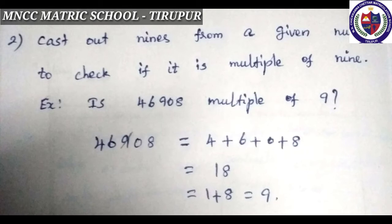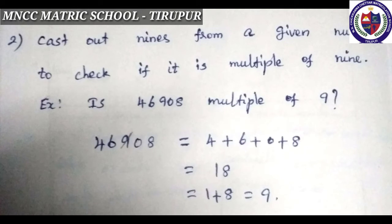We can cast out 9s from a given number to check if it is a multiple of 9. Example: is 46,908 a multiple of 9? Strike out the 9, then add the remaining digits: 4 + 6 + 0 + 8 = 18. Add again: 1 + 8 = 9. Yes, it is a multiple of 9.